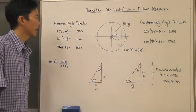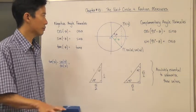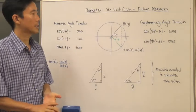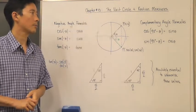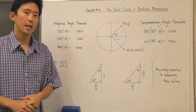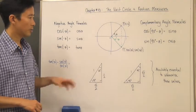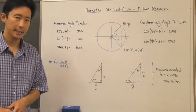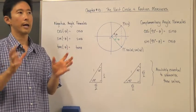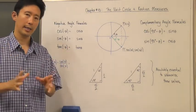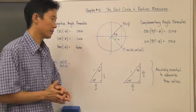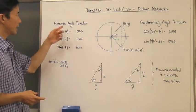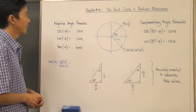Let's go ahead and continue. We're going to take a look at three things: the negative angle formulas, the complementary angle formulas, and two particular triangles that are absolutely essential to memorize — their angles and the lengths of the sides of those right triangles. Let's start off first with the negative angle formulas.